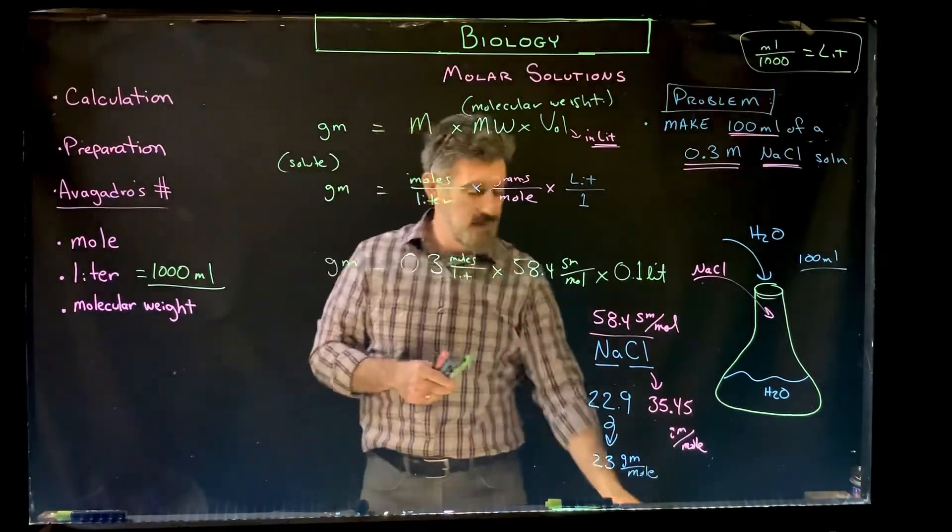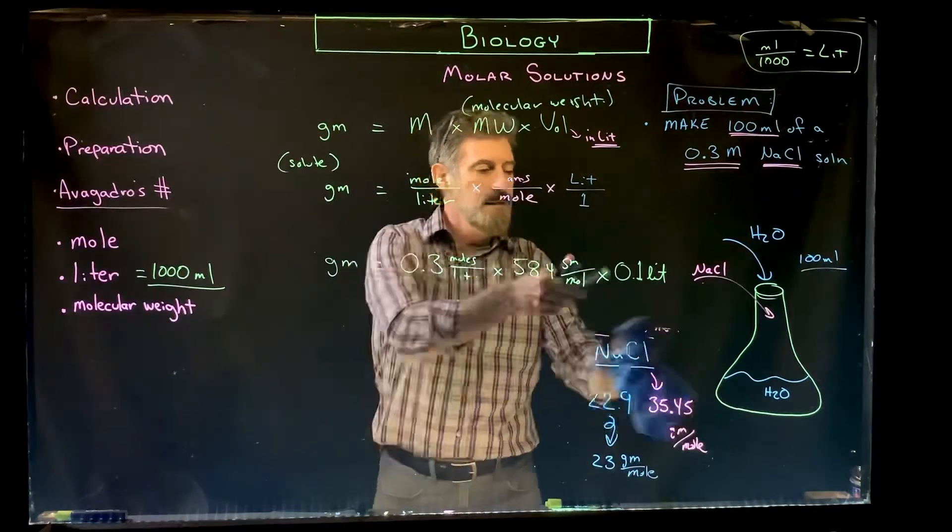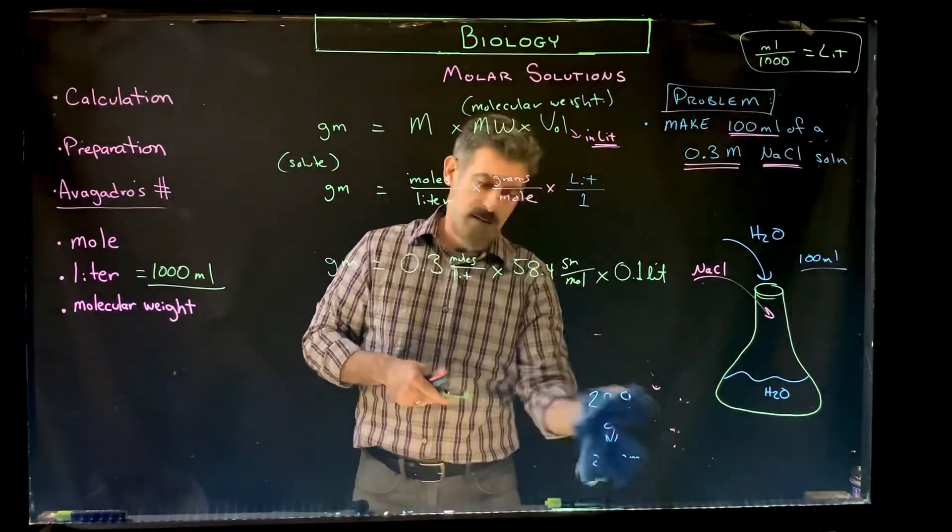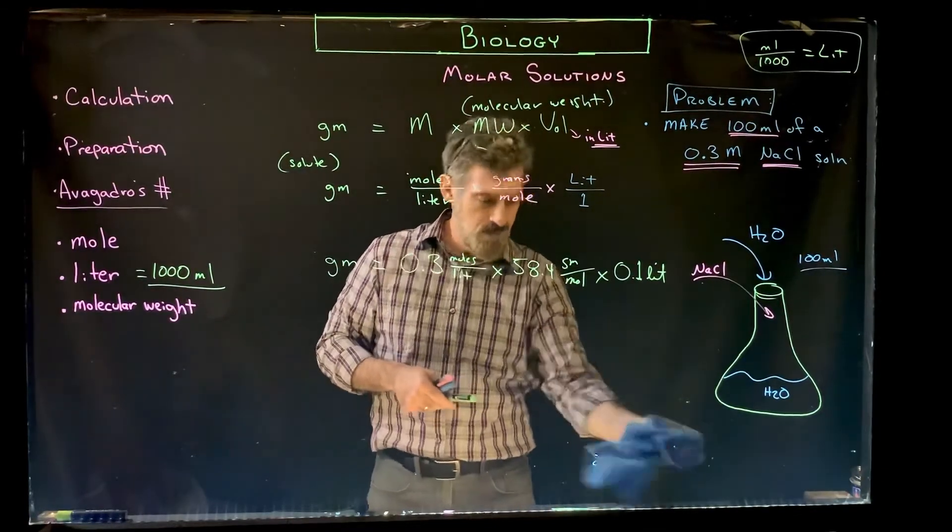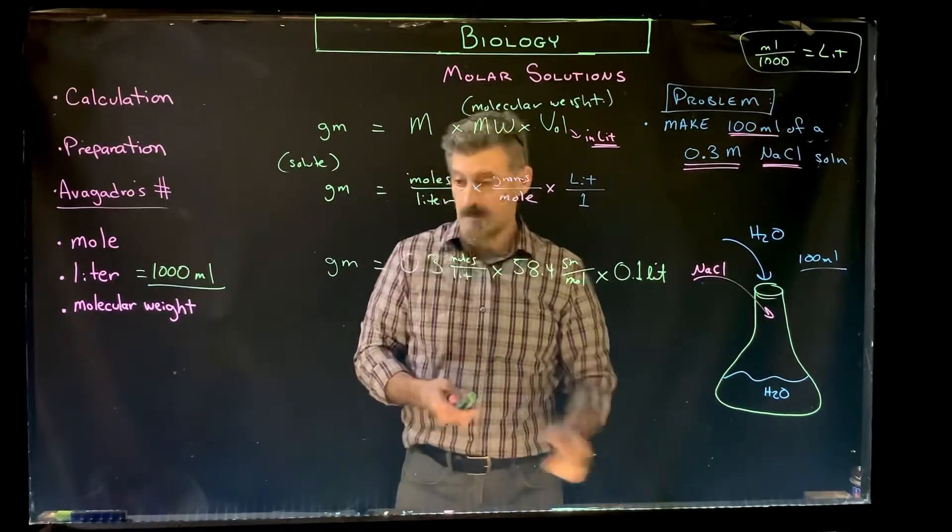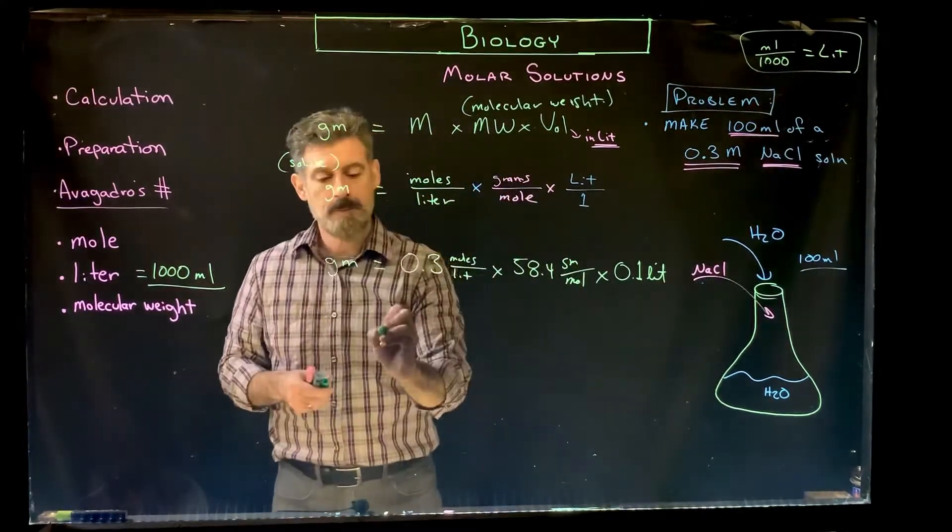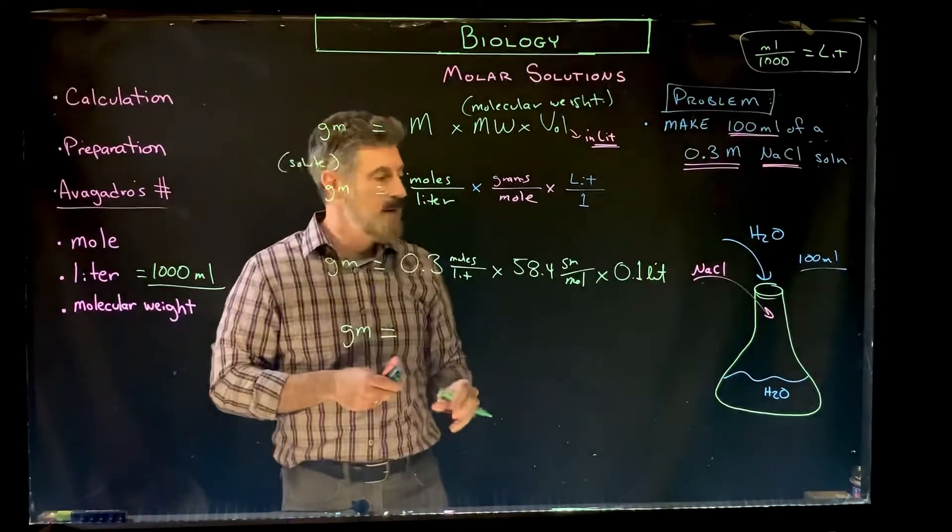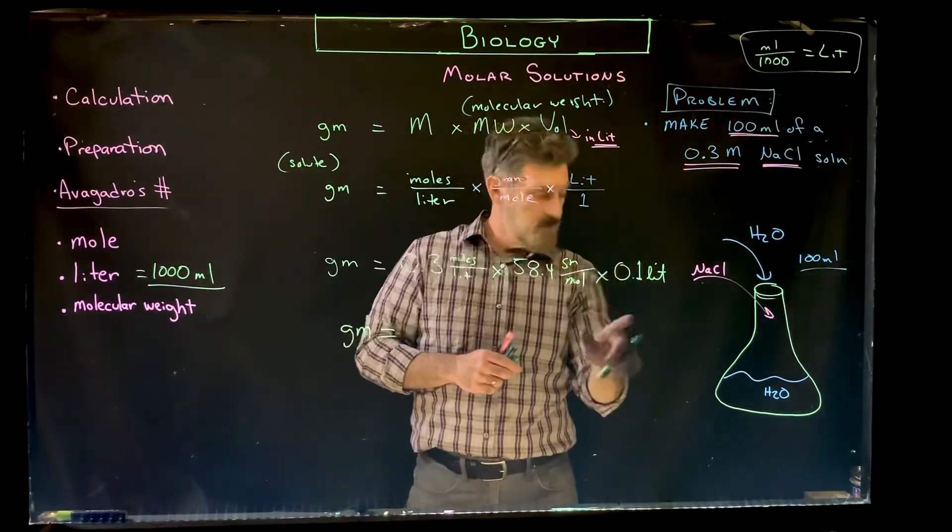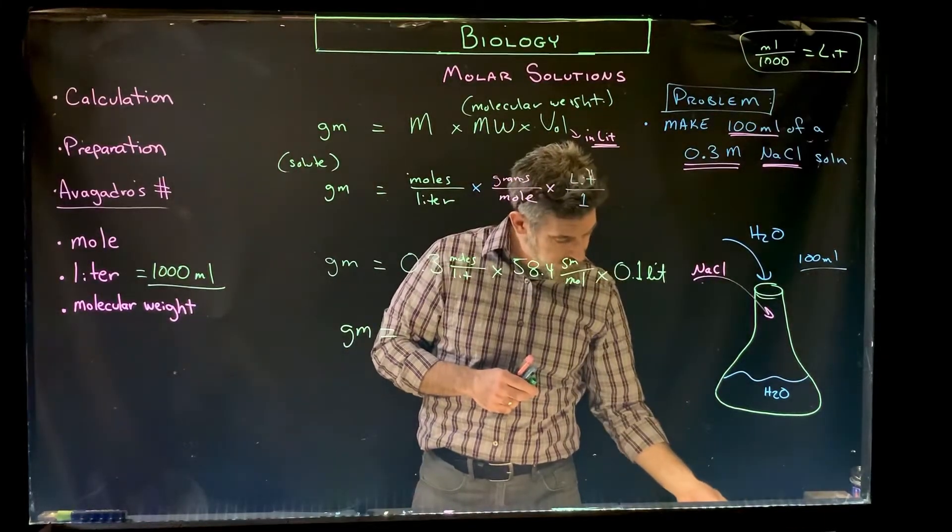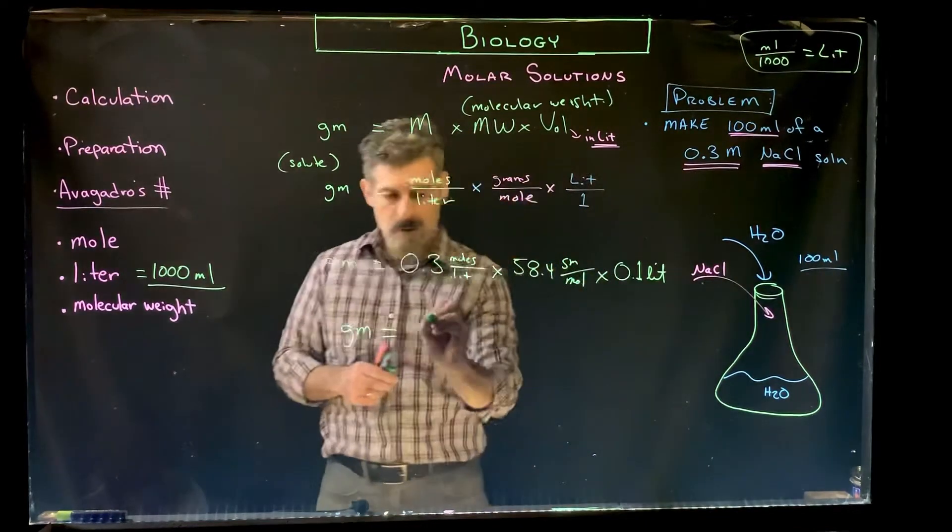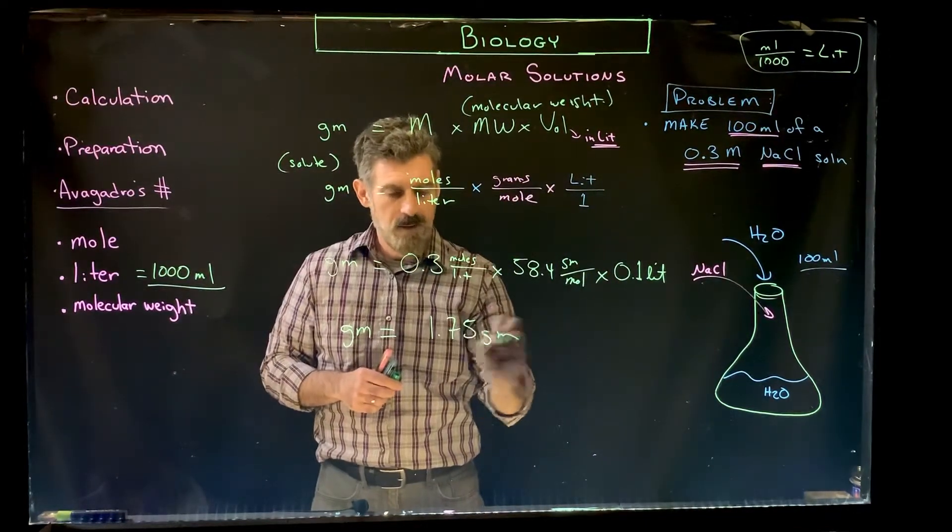And that's a very common thing. I see it happen all the time. People don't do the conversion. They stick milliliters in there and they get a ridiculous number. The solution is very, very over-concentrated. So then it's pretty simple. All you do is multiply. So how many grams of salt do we need? Multiply 0.3 times 58.4 times 0.1. And I already did it so I didn't have to fiddle with the calculator.